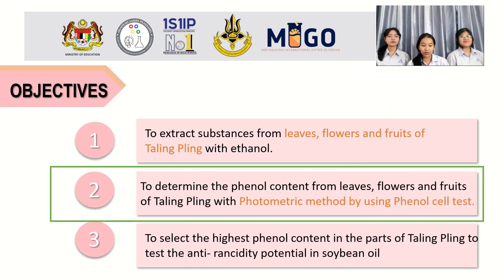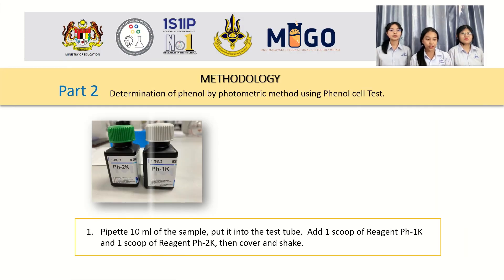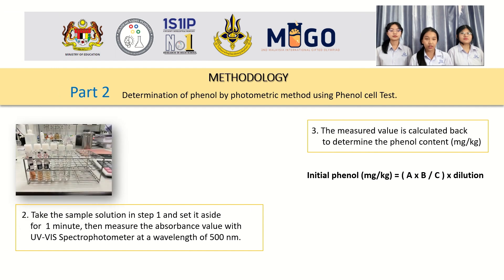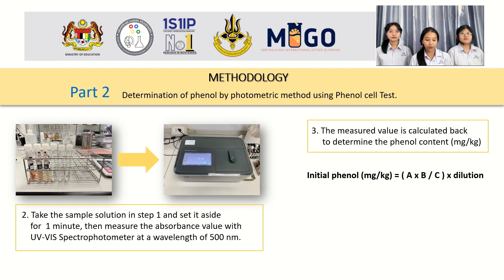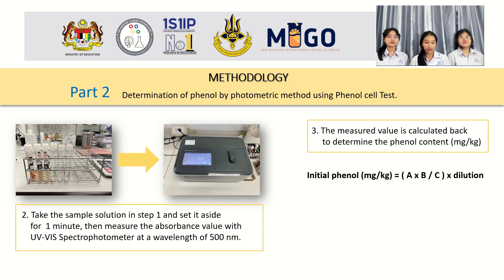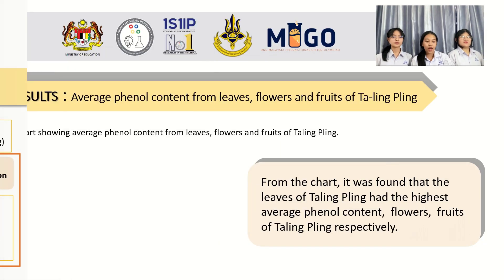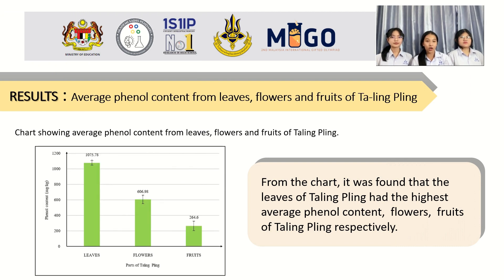The next topic is Objective 2: to determine the phenol content from leaf, flower, and fruit of bilimbi with photometric method by using phenol cell test. Determination of phenol by photometric method using phenol cell test. Step 5: pipette 10 ml of the sample. Step 6: push it into the cuvette. Step 7: add 1 scoop of reagent PS1K and 1 scoop of reagent PS2K, then cover and shake. Step 8: take the sample solution and set aside for 1 minute, then measure the absorbance with a UV-visible spectrophotometer at a wavelength of 500 nm. The measured value is calculated back to determine the phenol content. Determination of phenol content can be calculated from this formula. This is the total phenol content from leaf, flower, and fruit of bilimbi.